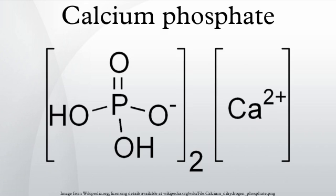Calcium phosphate is the name given to a family of minerals containing calcium ions together with orthophosphates, metaphosphates or pyrophosphates, and occasionally hydrogen or hydroxide ions.